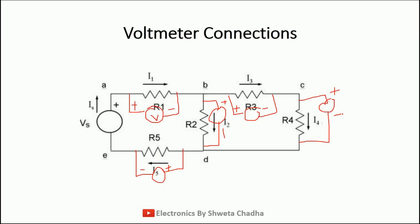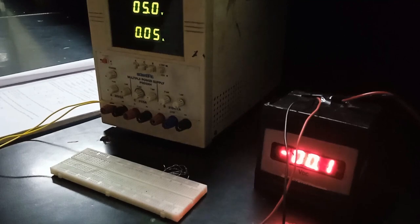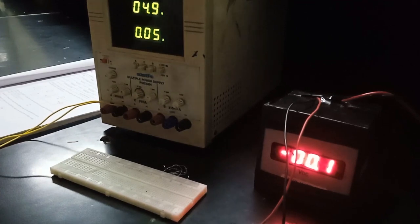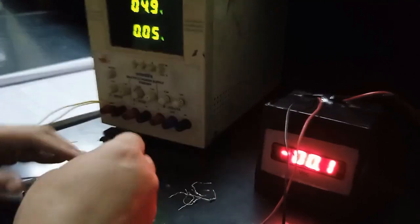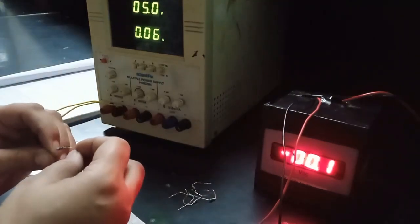By doing so, you will be able to calculate and verify Kirchhoff's voltage law by substituting all the measured values into the KVL equations. While doing the practicals, there may be some errors, but that is acceptable. Now let us discuss how the connections will be done on the breadboard. For KVL, we need to connect five resistances, and all five will have a resistance of 1 kilo ohm.